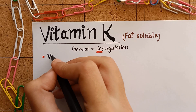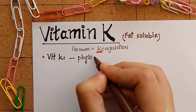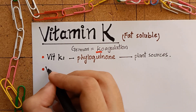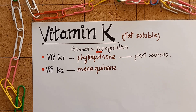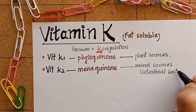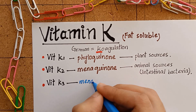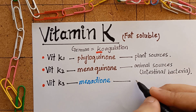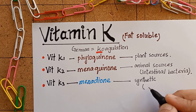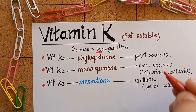Vitamin K exists in three different forms. Vitamin K1, also known as phylloquinone, is present in plants. Vitamin K2, also called menaquinone, is found in animals and is also produced by our intestinal bacteria. The third form is vitamin K3, also known as menadione, which is the synthetic form.